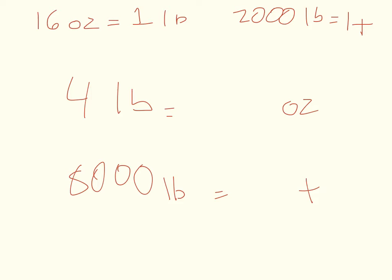So as a reminder at the top, I wrote the conversion. So 16 ounces is 1 pound, and 2,000 pounds is 1 ton.